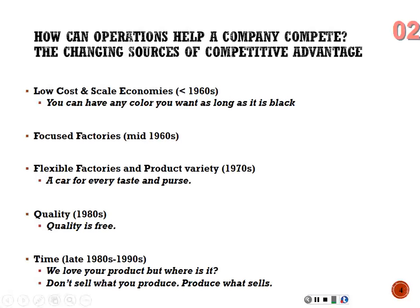How can operations help a company compete? Back in the 1960s, coming out of the World War Two environment, our boundaries were established — we produced what we bought here in the United States. 'You can have any color you want as long as it's black' — the Henry Ford mentality: if we produce it, they're going to buy it. Then into the 1960s we started thinking about focused factories and being more efficient, and in the 1970s we moved into flexible factories and product variety.